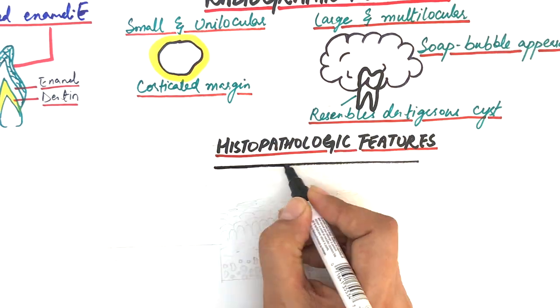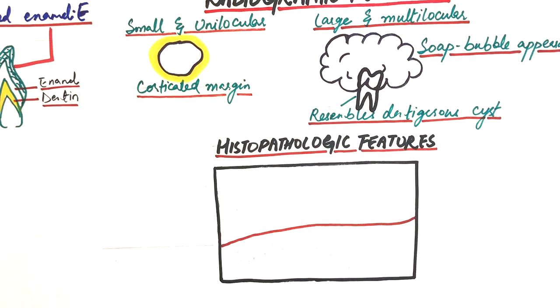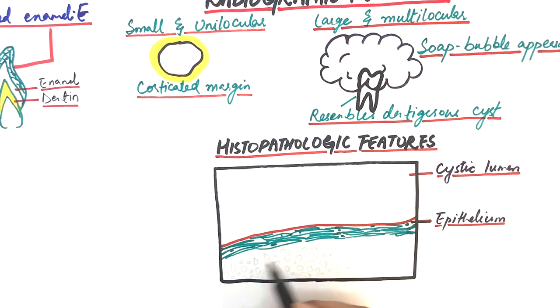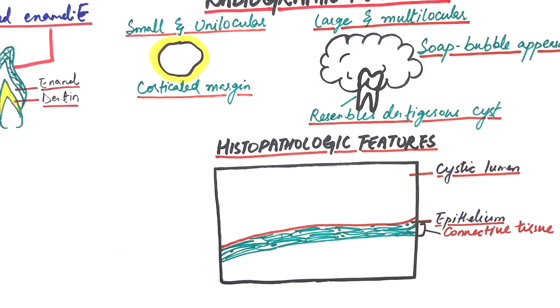Histologically, the cyst possesses a cystic lumen, an epithelial lining, and an extremely thin connective tissue or fibrous capsule, which makes it difficult to enucleate from the bone in one piece.